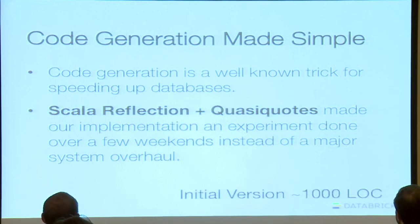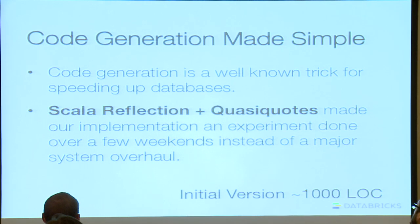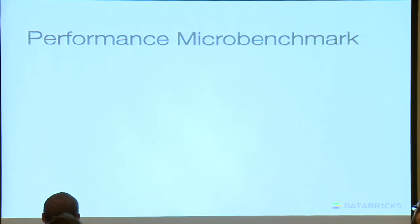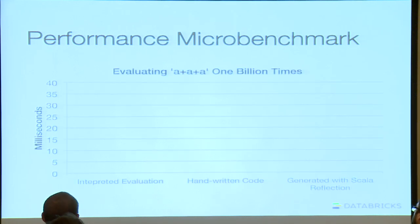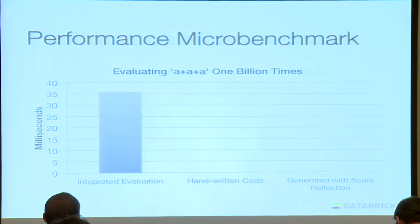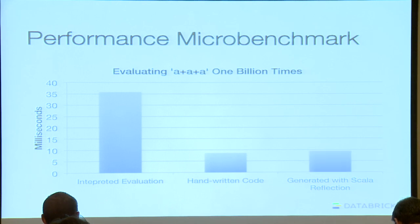The code generation is quite extensible, and it's easy for developers to contribute. For a microbenchmark — evaluating A plus A plus A a billion times — the naive interpreted evaluation takes quite a while. Writing custom Spark code as a good Scala programmer gets it down to under 10 seconds. Using Scala reflection code generation achieves almost exactly the same performance. So you get hand-coded performance just by writing SQL queries.